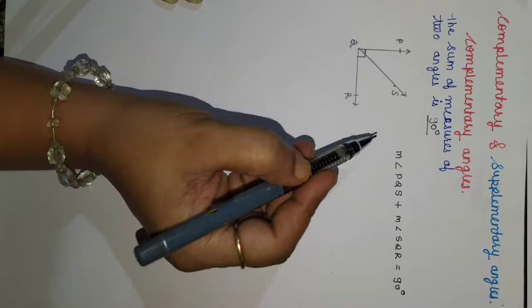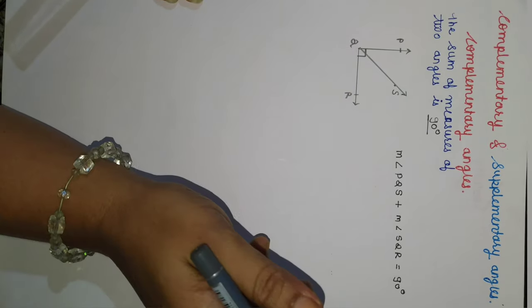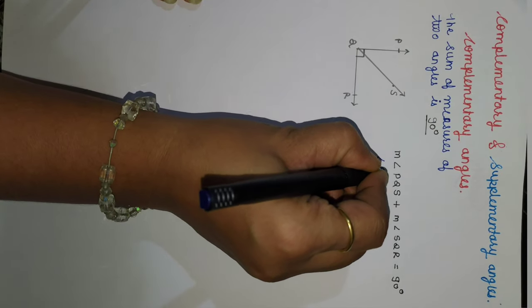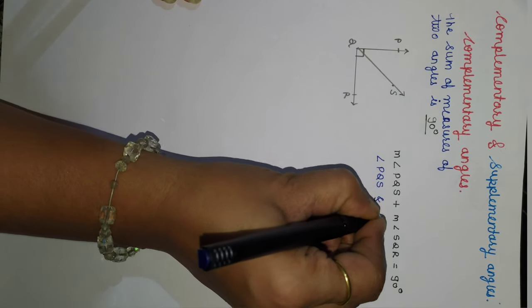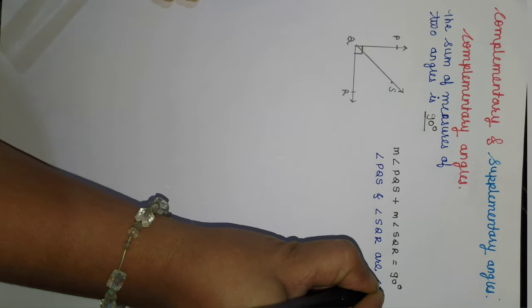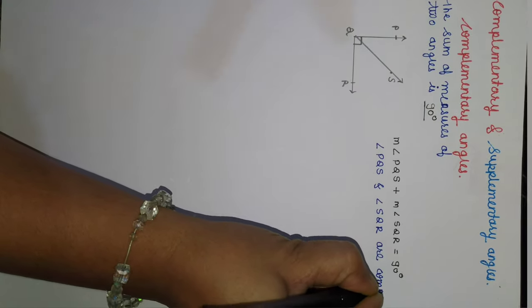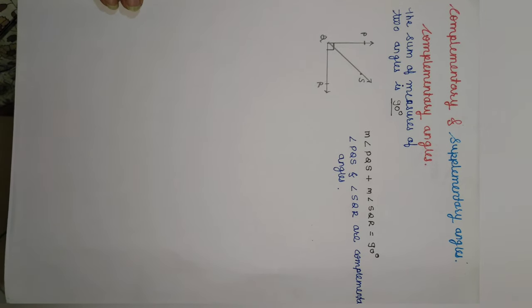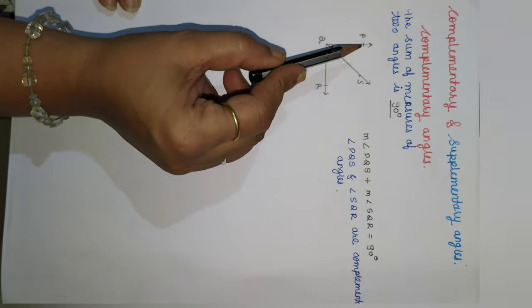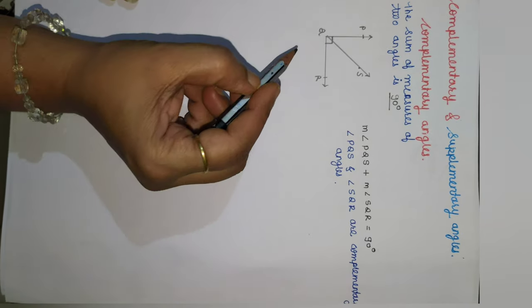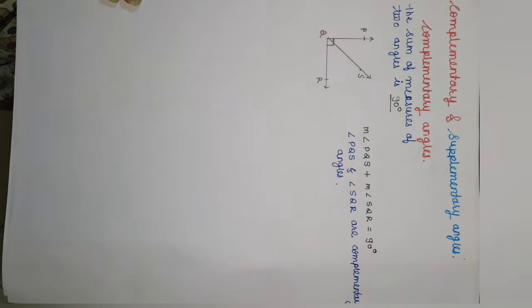As angle PQR is a right angle and its measure is 90 degrees, we will say that these two angles — angle PQS and angle SQR — are complementary angles. The pairs of complementary angles may be part of one angle or two different angles.